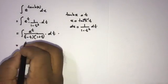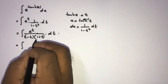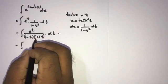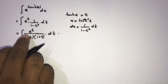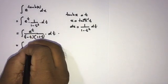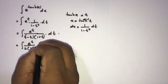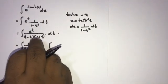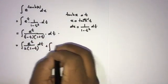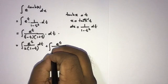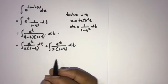The denominator is a difference of two squares, so 1 minus t squared equals (1 minus t)(1 plus t). We use the cover method for partial fractions. Plugging in t equals 1 gives coefficient 1 over 2, and plugging in t equals minus 1 also gives 1 over 2. So the integral splits into: e to the t over (2(1 minus t)) dt plus e to the t over (2(1 plus t)) dt.